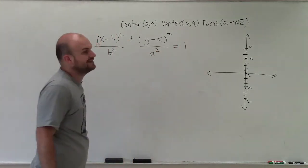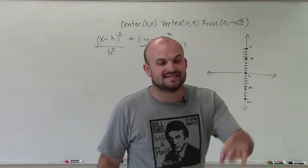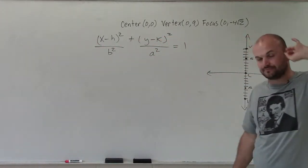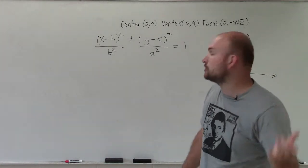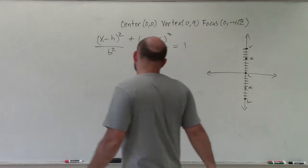And that is only true for an ellipse, where a represents the distance from the center to your vertex, and b represents the distance from your center to your co-vertex, or to one of your co-vertices.